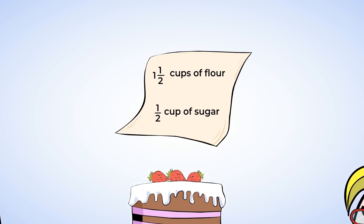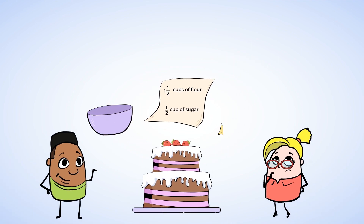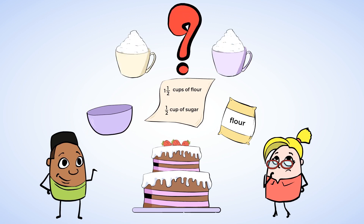It calls for one and a half cups of flour and one half cup of sugar. You're trying to make sure that you have a bowl large enough for all the ingredients, so you want to figure out how many cups you have when you combine the flour and sugar together.